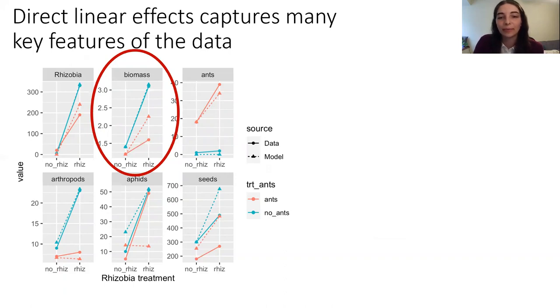The blue lines represent the with and without ant treatments, and the red lines the with ant treatments. Lastly, the solid lines represent Keller's original data and the dashed lines represent the output of our model.